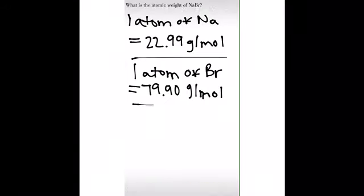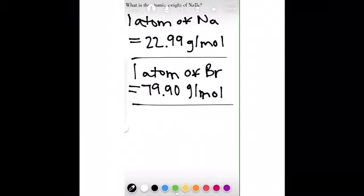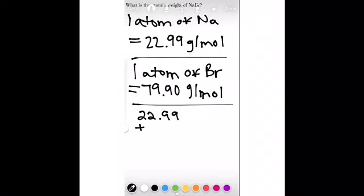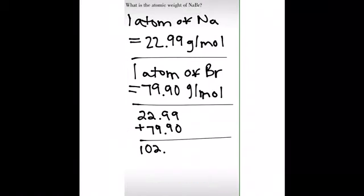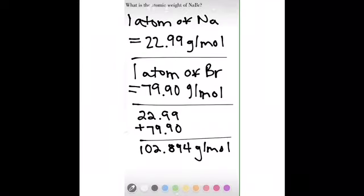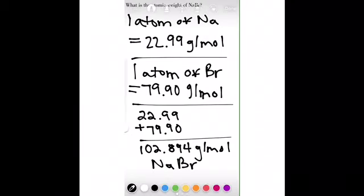Now to find the total atomic weight of sodium bromide, we're going to add both the molar mass of sodium and the molar mass of bromine together, and we're going to get 102.894 grams per mole sodium bromide. Thank you.